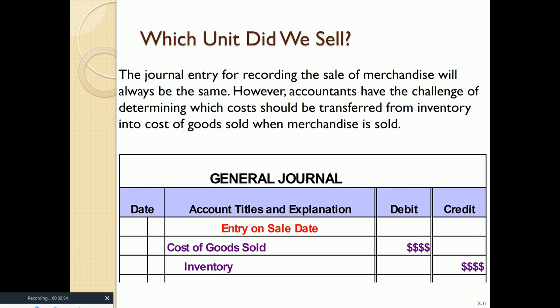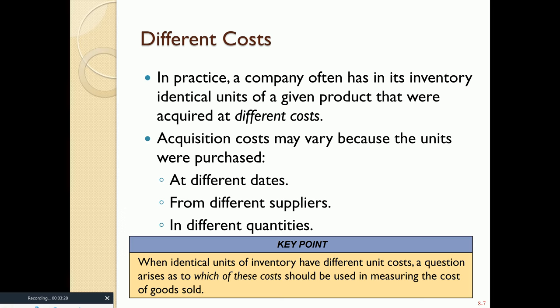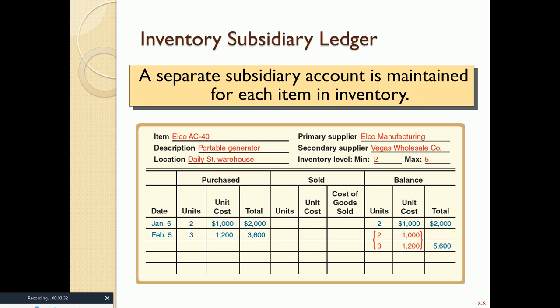A good question is: which items did we actually sell? When we buy inventory from our vendors, the price fluctuates — prices could be increasing, decreasing, or going up and down based on the market. We need to come up with an accounting methodology to determine which items we indeed sold. Before going into the various methods, let me show you what an inventory subsidiary ledger looks like. For every item in our inventory, we keep a separate subsidiary ledger.